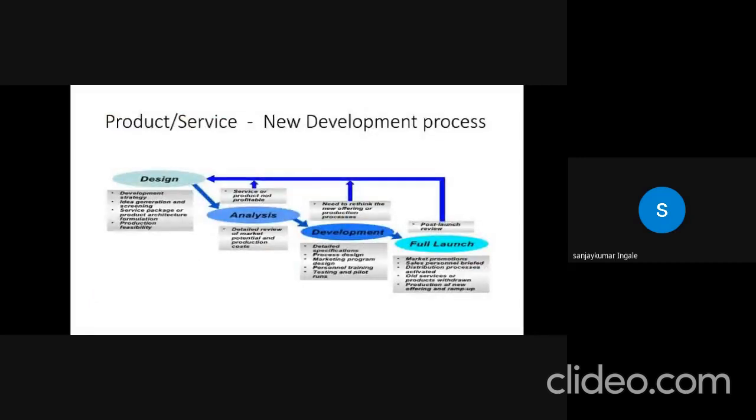Product service. It means the new development of process. First process is design development strategies. Ideal generation and screening. Service packages or product architecture. Formation. Product facility availability analysis. Detailed review of market potential and products cost. Development. Detailed specifications. Process design. Marketing program design. Personal training. Testing and pilot training. Full launch. Market promotion. Sales personal brief. Distribution process achieved. Old services or product withdrawal. Product or new offering and ramp ups.